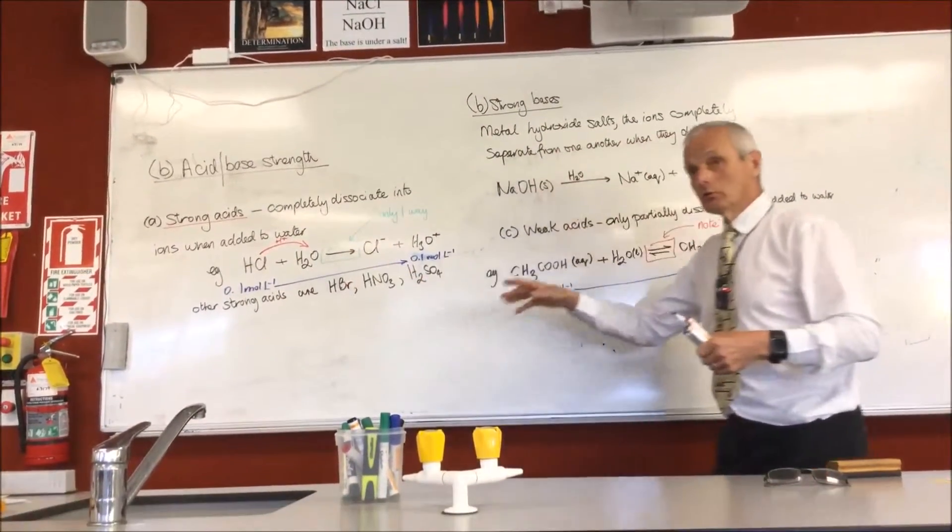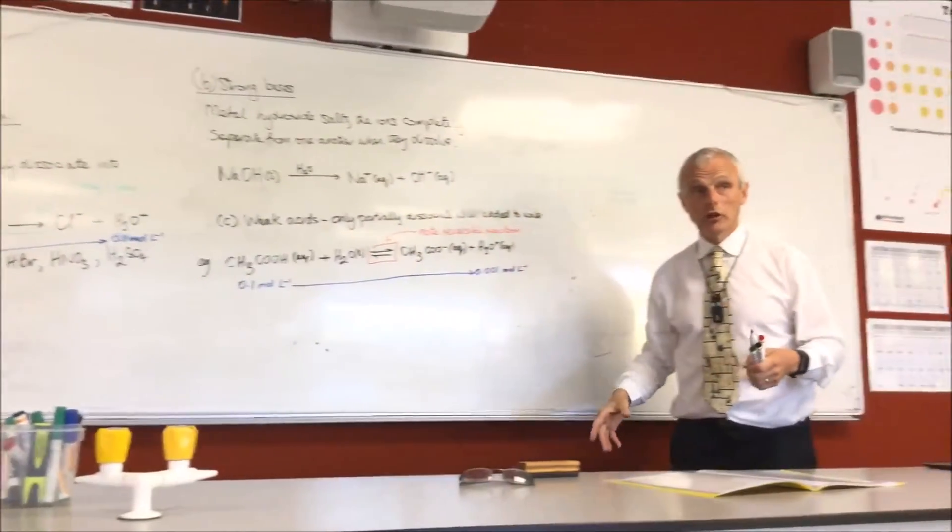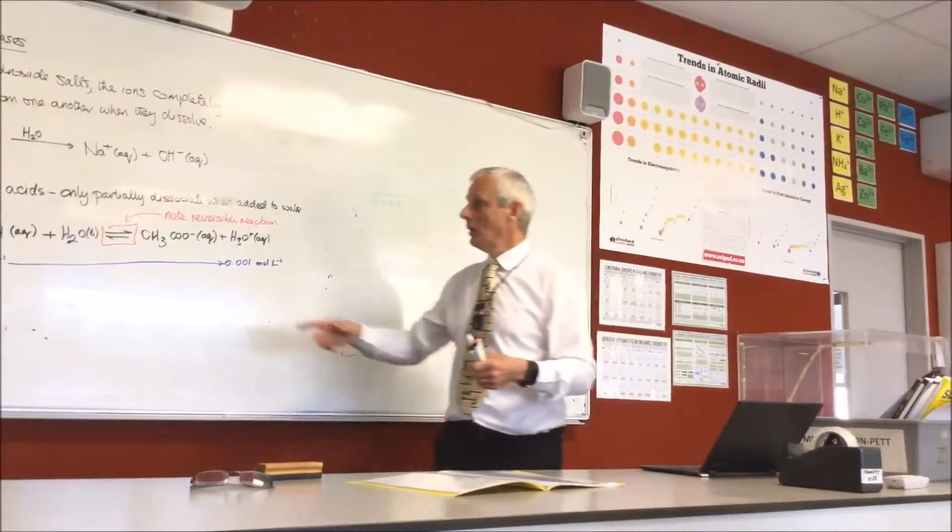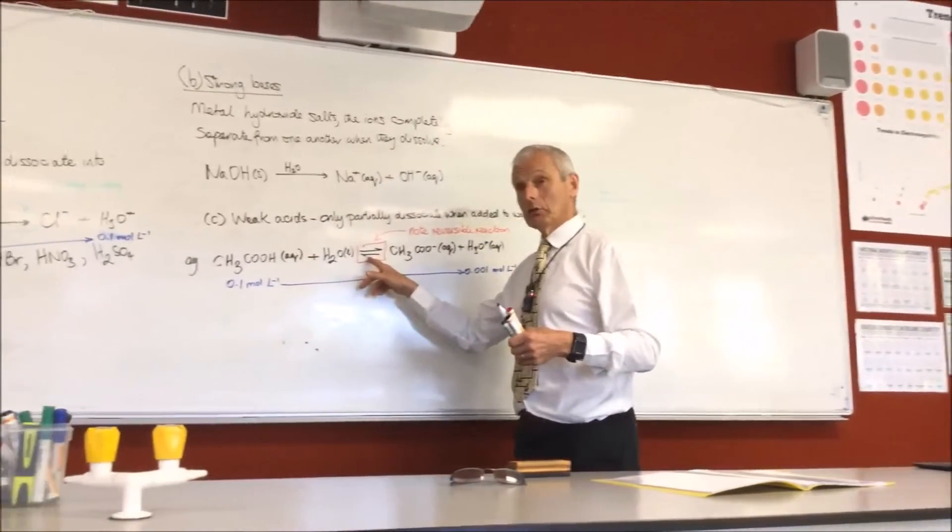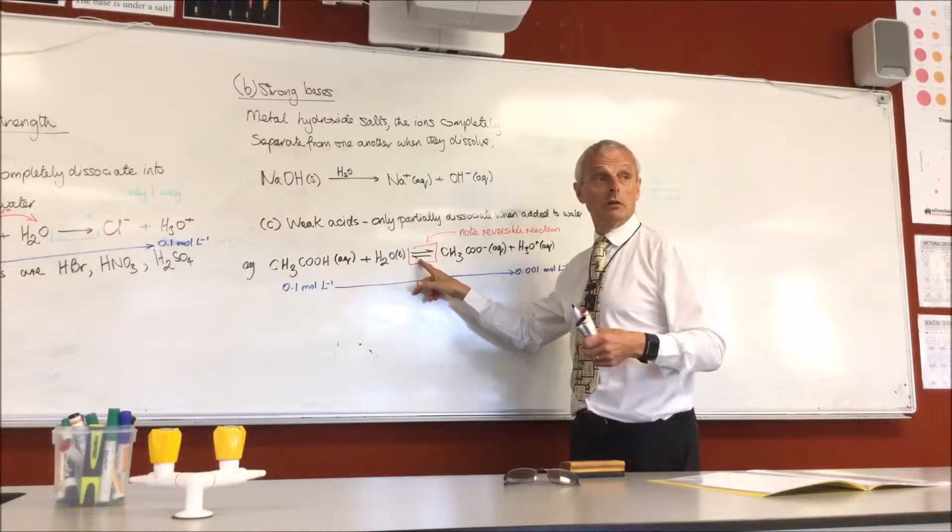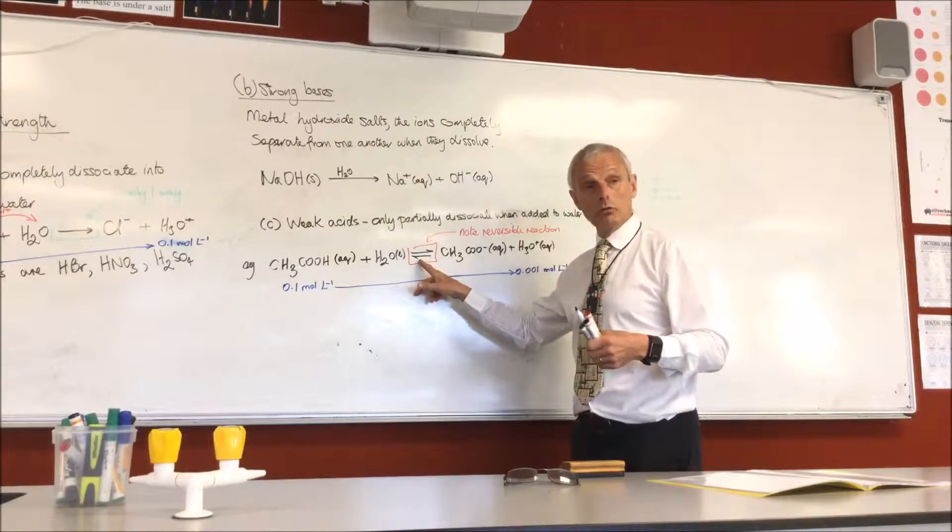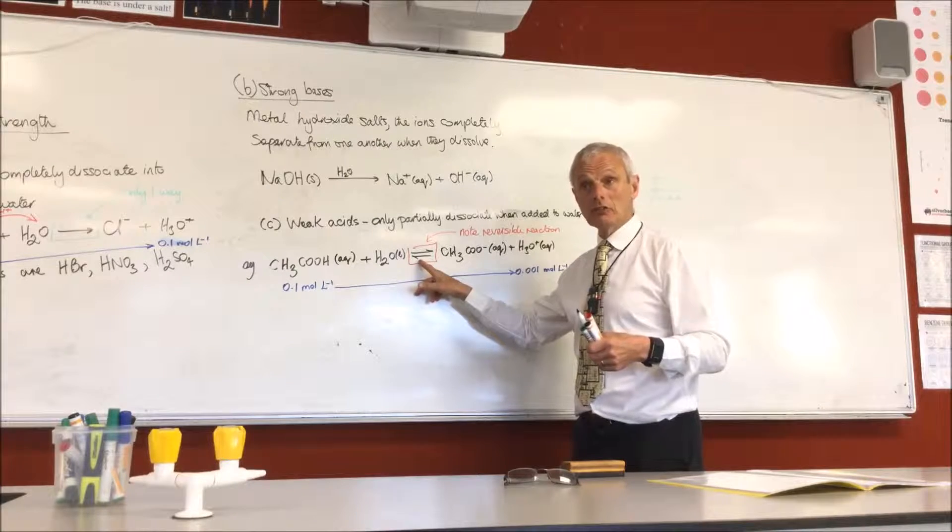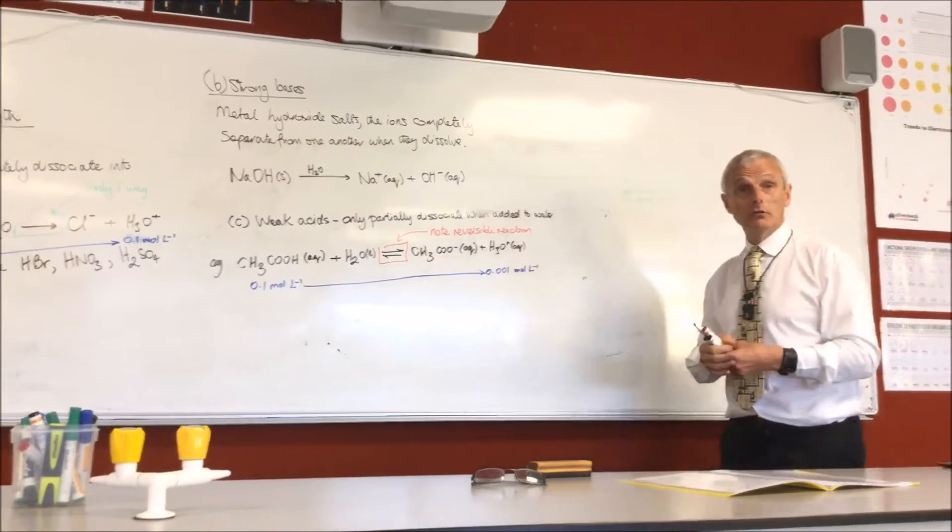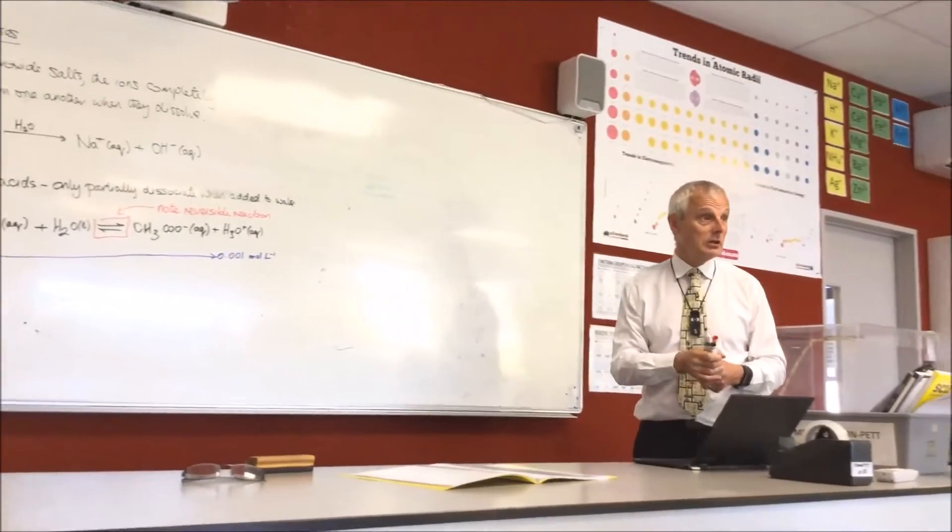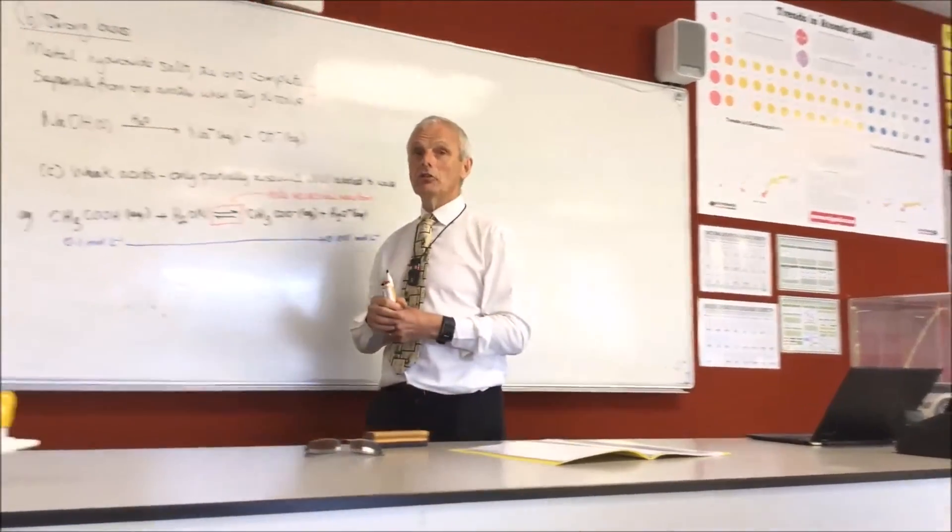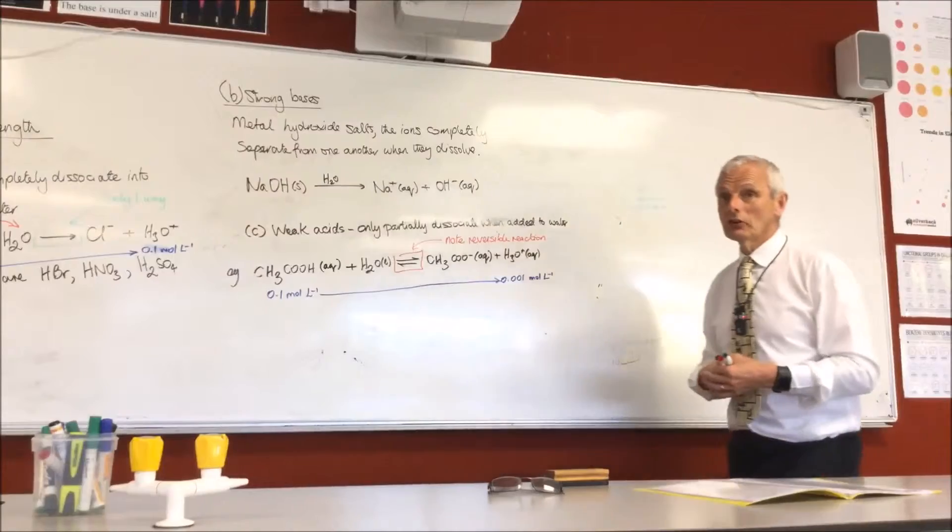It is really, really important that if you're dealing with either a weak acid or a weak base, you must, absolutely must, use a reversible arrow. If you don't, you'll lose the mark. And they will ask you a question, probably, that involves you having to write an equation. It shows, if you don't, that you don't recognise the difference between weak and strong acids.